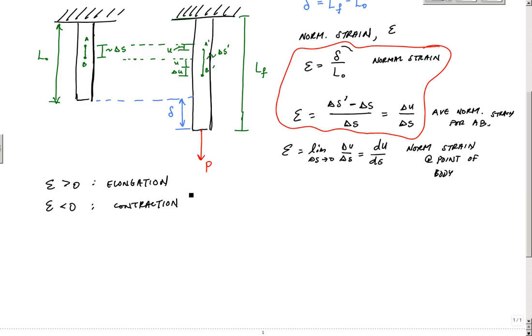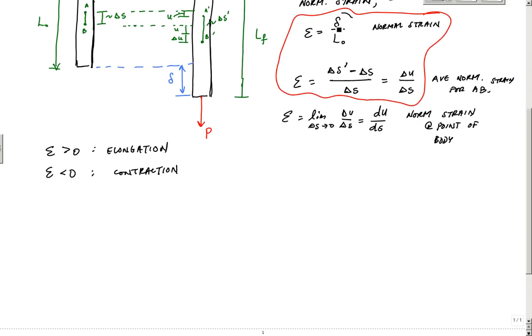Another thing you always want to be aware of are the units. And the units for this, if you look at this, it's dimensionless. So the units of normal strain, it's dimensionless. And what's typically used is really, it's common to write the units as length over length. So things would be like meter per meter or inch per inch.